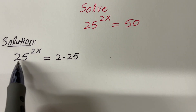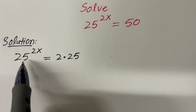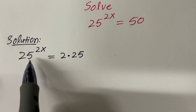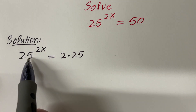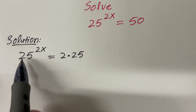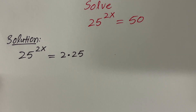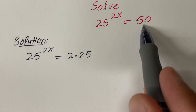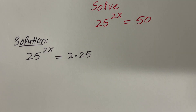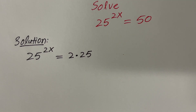Why 25? Because if you look at here, the left-hand side has some exponents of 25. That's why I'm just writing 50 as 2 times 25.